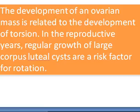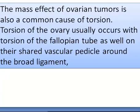The development of an ovarian mass is related to the development of torsion. In the reproductive years, regular growth of large corpus luteal cysts are a risk factor for torsion. The mass effect of ovarian tumors is also a common cause of torsion.